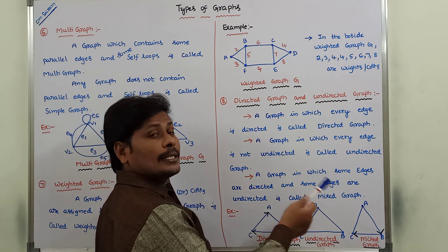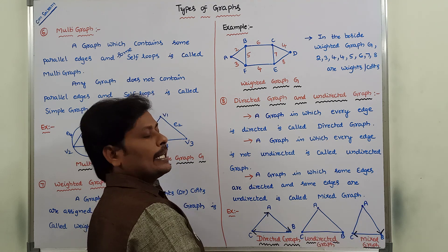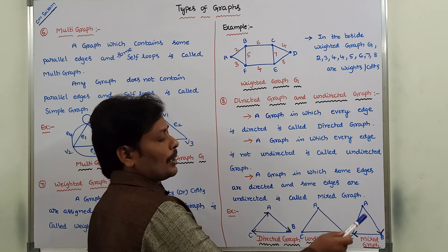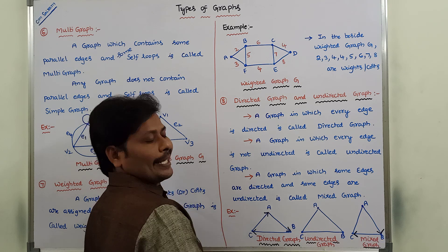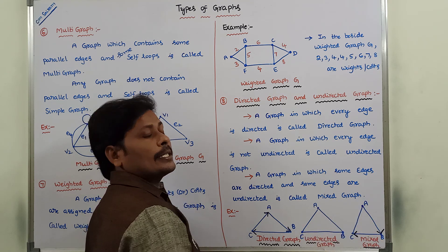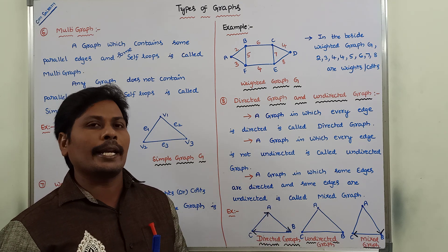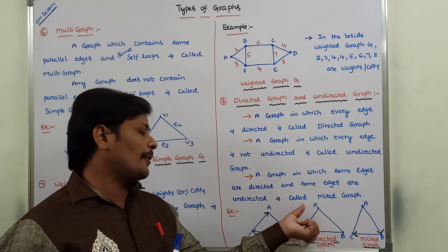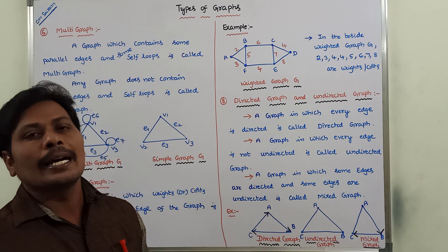A graph in which some edges are directed and some edges are undirected is called as mixed graph. Here, A to C edge is undirected, so A to C equals C to A. But A to B edge has a direction, so A to B exists but B to A does not. Similarly, B to C edge exists but C to B does not. A to B and B to C are directed edges, while A to C is undirected.